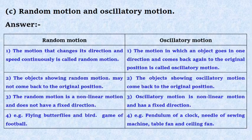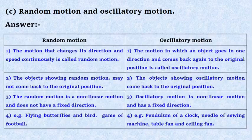Examples of random motion: flying butterflies and birds, game of football. Examples of oscillatory motion: pendulum of a clock, needle of a sewing machine, table fan and ceiling fan.